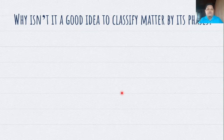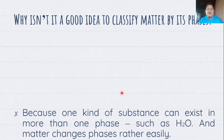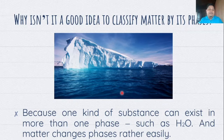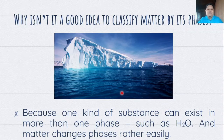Why isn't it a good idea to group matter according to those phases? The answer is because there is one kind of substance that can exist in more than one phase, such as water or H2O. Remember, when we freeze water it becomes its solid state, also known as ice. But when we melt that ice, heat it up, boil it, it becomes a gaseous state called steam. So there is no definite state of water since it can be solid, liquid, or gaseous. Therefore, it is not a good idea for scientists to group matter according to phases, because matter changes phases rather easily, just like water.